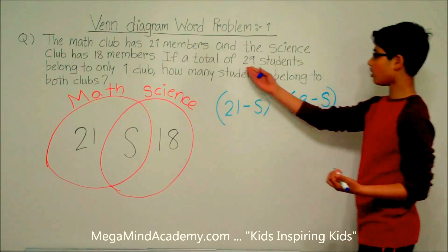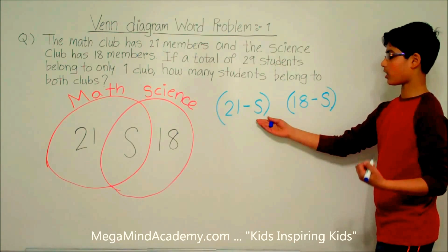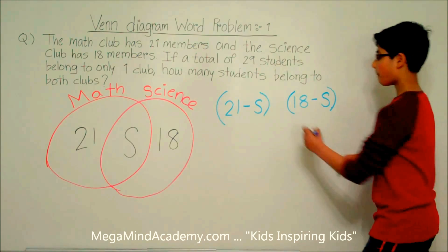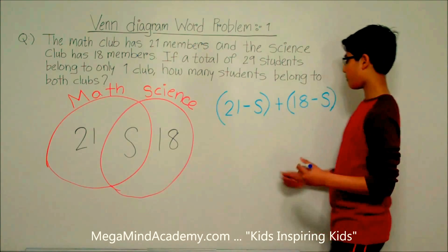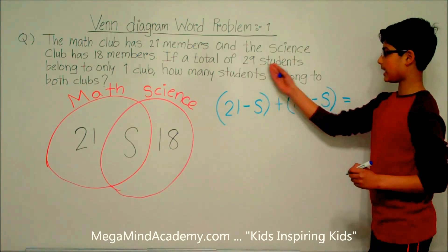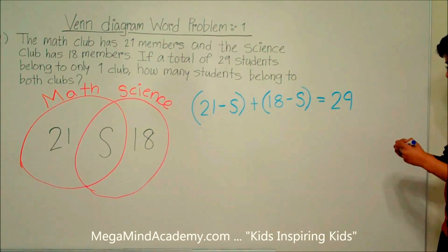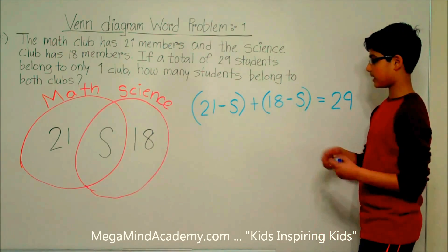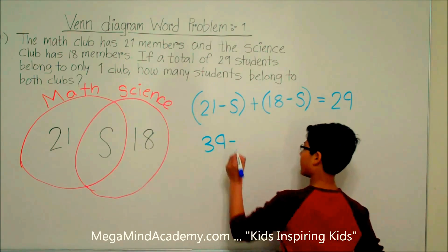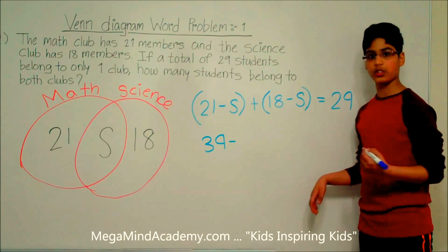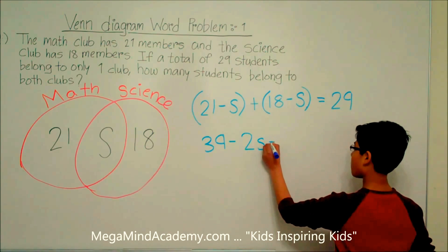It says there are a total of 29 students who belong to only one club. So (21 minus S), which are the students who belong to only the math club, plus (18 minus S), which are the students who belong to only the science club, is equal to 29. Let's simplify: 21 plus 18 equals 39, so 39 minus 2S equals 29.